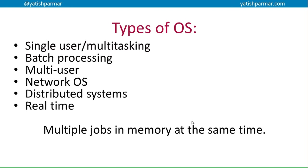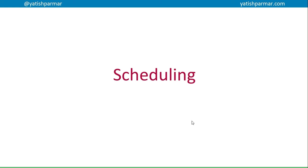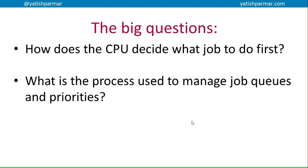Most of those types of operating system involve having multiple jobs in memory at the same time. It's quite clear that the operating system needs a set of rules which allow it to determine how much resourcing is made available for a particular job - and that's why we talk about scheduling. Big questions for this video: how does the CPU decide what job to do first, and what is the process used to manage different job queues and priorities?